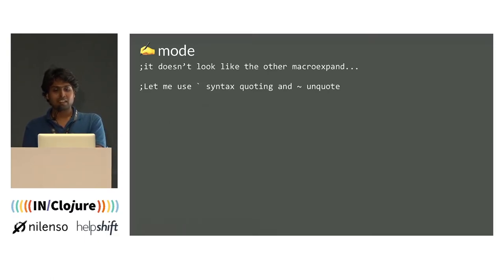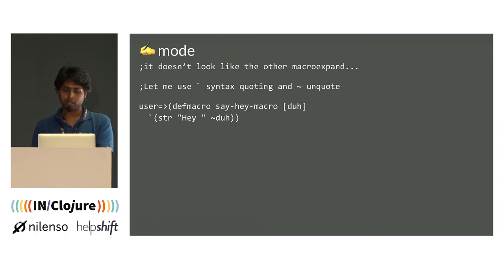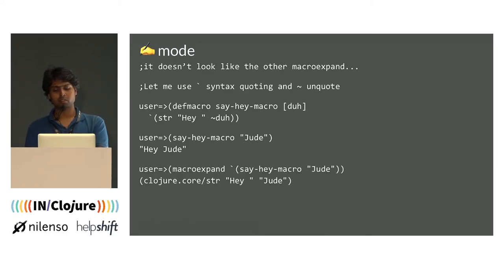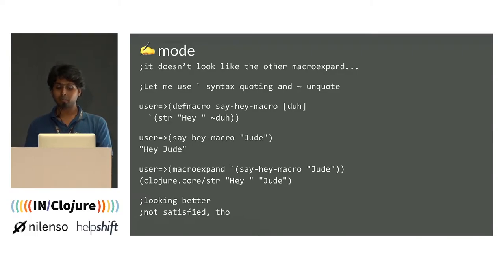Let's try some syntax quoting, the tilde unquotes, and the weird symbols. The next version of the same macro uses syntax quoting on the internal function and unquotes to capture the `duh` symbol passed as part of the defmacro. Unquotes allow us to access symbols slightly outside the syntax-quoting area but not part of the main namespace where the macro is defined. When expanded, it shows `clojure.core/str hey jude`. One lesson: when you unquote and access a variable defined in the defmacro, it replaces every instance of that unquote in the expanded code.